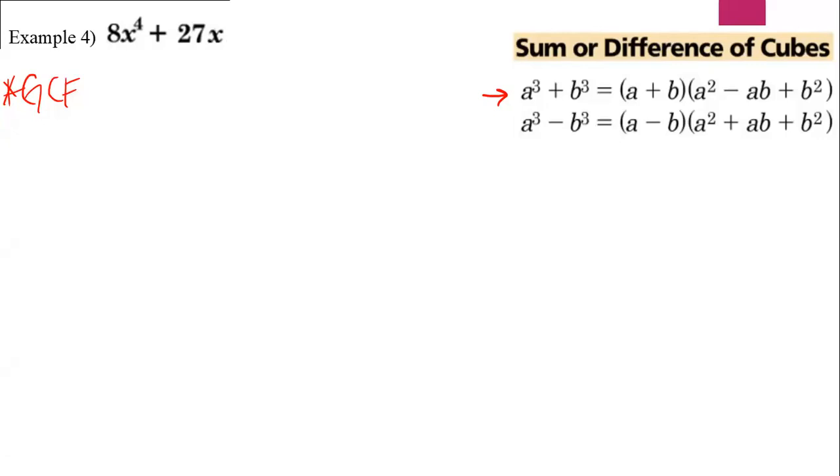So in this example, there is a GCF. The GCF equals x, so I'm going to factor out x. When I factor out x, I'm left with 8x cubed plus 27.